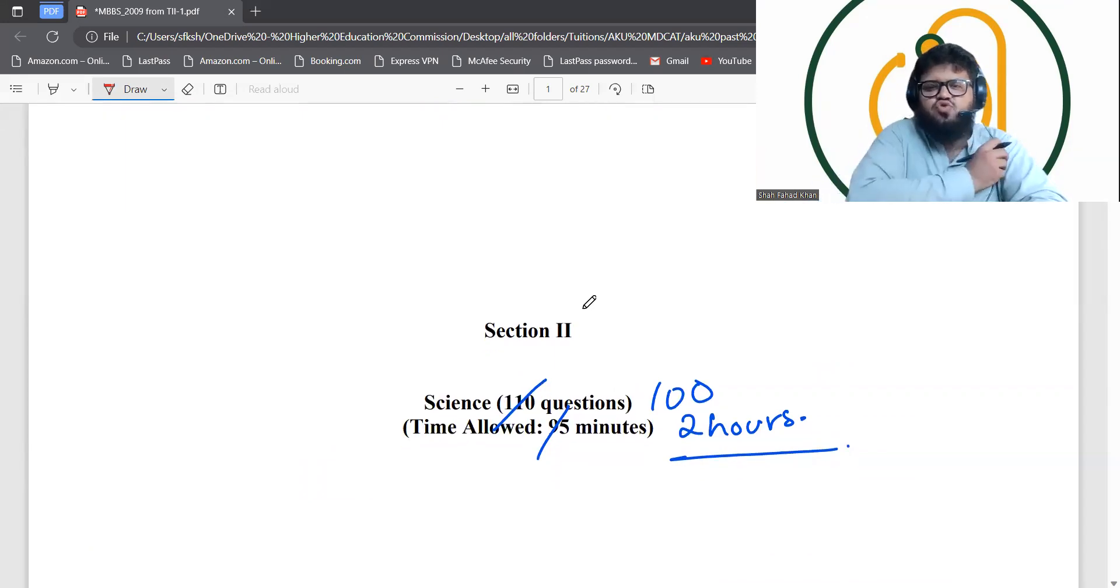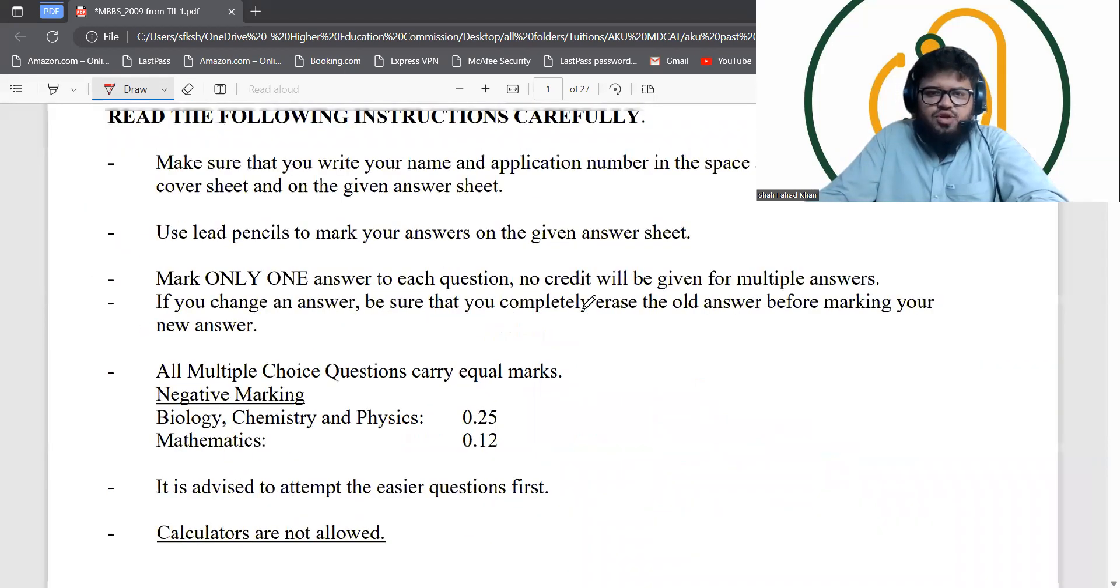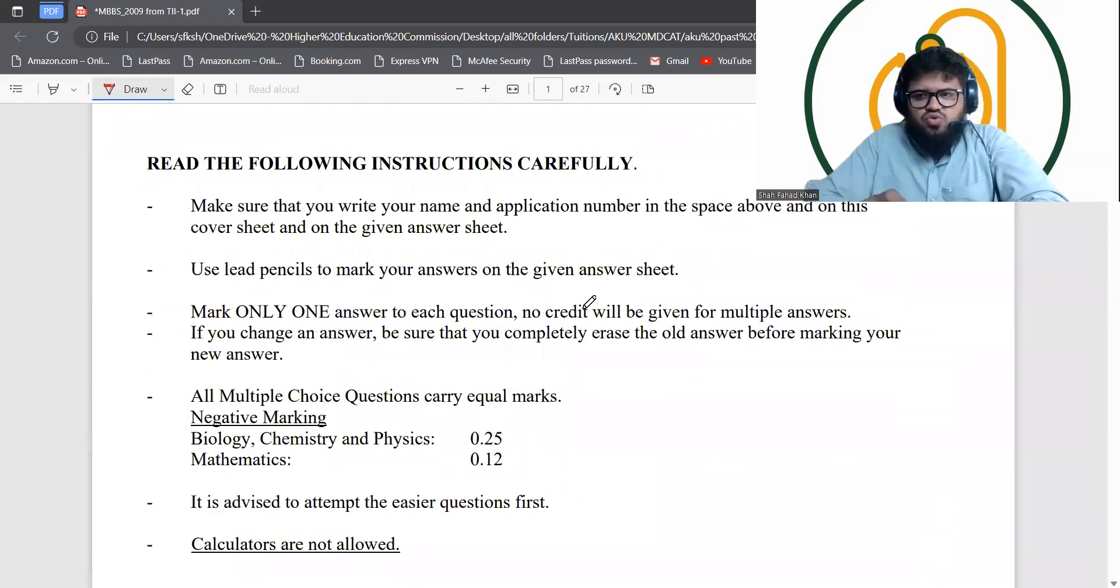Now the paper pattern of 2023 is 100 questions for two hours, not 110 questions. You don't have English, you only have chemistry, biology, physics, math reasoning, and science reasoning.